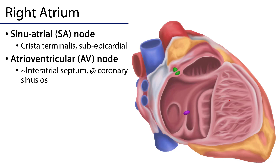Here is a closer view of the right atrium. We can see the SA node at the superior rim of the crista terminalis, and the AV node at the nexus of the interatrial septum and the atrioventricular septum, just adjacent to the opening of the coronary sinus.